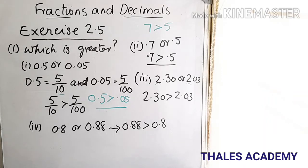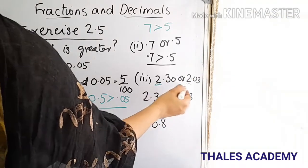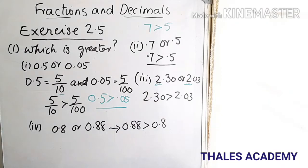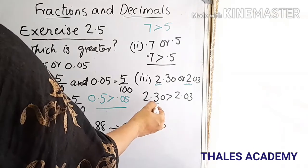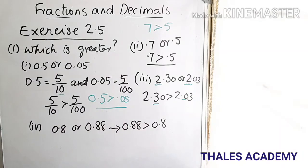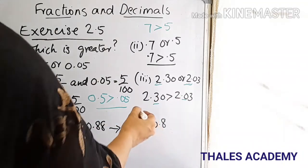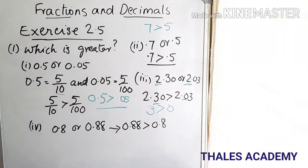The third question is 2.30 or 2.03. To compare, we first take the digits left of the decimal point — in both numbers it is 2. Then we take the digits right of the decimal point: at the tenths position it is 3 and 0 respectively. Since 3 is greater than 0, 2.30 is greater than 2.03.